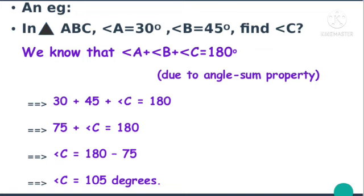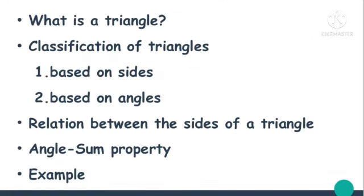So up to now, we have seen what is a triangle, the classification of triangles based on sides and angles, the relationship between the sides of a triangle, and the angle sum property with an example. Let's stop here, children. Please go through your textbook problems related to these properties and try to solve them. We will discuss your doubts in the next session. Thank you.